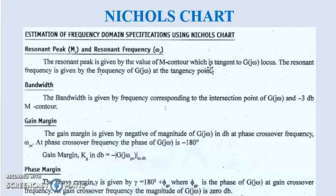The next frequency domain specification is the bandwidth, which represents the range of frequencies for which the system gain is greater than −3 dB. The bandwidth is given by the frequency corresponding to the intersection point of G(jω) and the −3 dB M contour. The bandwidth ω_b is given by: ω_b = ω_n [ (1 − 2ζ²) + √(2 − 4ζ² + 4ζ⁴) ]^(1/2).